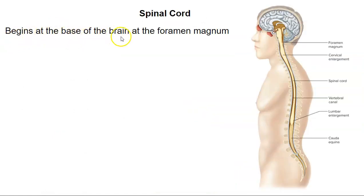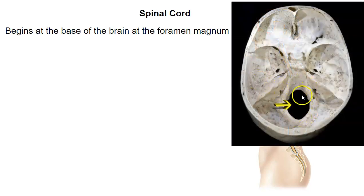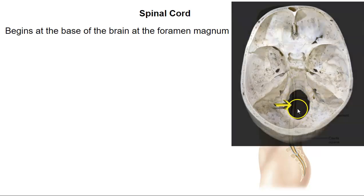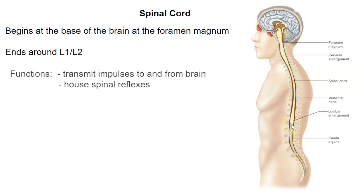The spinal cord begins at the base of the brain as it exits through the foramen magnum — that's the big opening in the skull where the brain stem exits. As it does, it's then called the spinal cord down here. It ends around in between the first and second lumbar vertebrae. Its function is to transmit impulses to and from the brain, and it also houses the spinal reflexes.